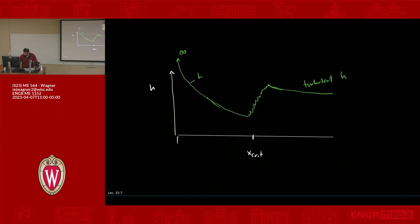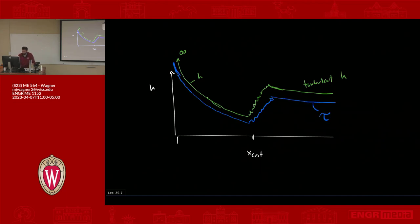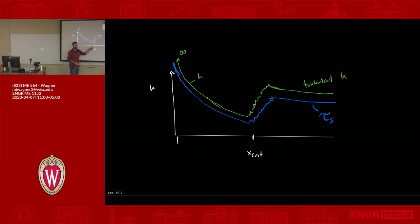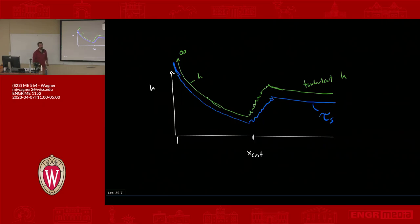We can do the same for shear stress: at the leading edge it's high, then drops, transitions, and follows a turbulent profile. The key engineering insight is that the worst possible place for heat transfer is just before you transition to turbulence. If you're designing a heat exchanger and you design it for just below the critical Reynolds number, you're doing a bad job. Make it turbulent, or figure out how to break up the boundary layer — like in that homework problem.